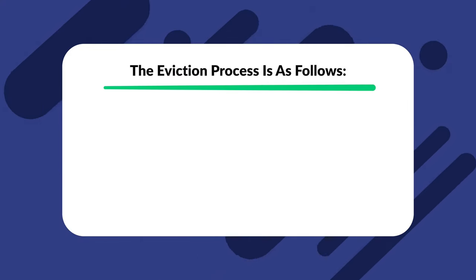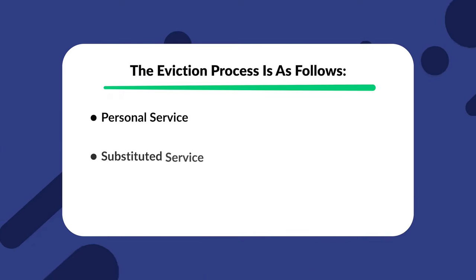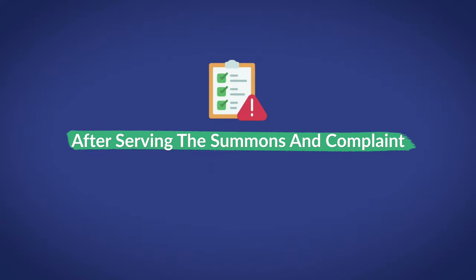How to serve a tenant: an official from the court delivers the court order, which is the summons for the eviction hearing and the complaint, to the tenant. There are several methods available: personal service and substituted service. If any of those mentioned methods fail, other methods may be taken with the approval of a judicial officer. After serving the summons and complaint, the tenant must file for an appearance in court by the return date, which is found on the summons. An appearance is a document filed with the court so that the tenant may be given permission to show up to the hearing. If the tenant fails to file an appearance, a default judgment may be given in favor of the landlord.